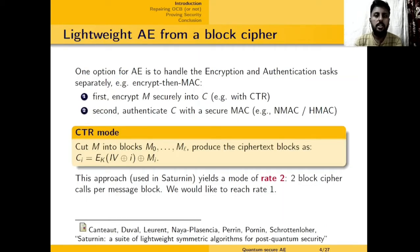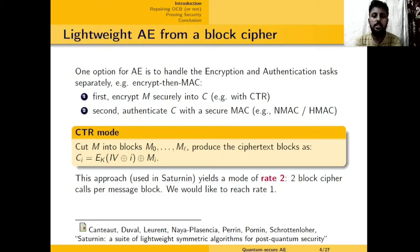One way to achieve authenticated encryption is to handle encryption and authentication tasks separately, like in the encrypt-and-MAC paradigm, where we first encrypt the message securely into a ciphertext C using some mode like counter mode, and then authenticate C with a secure MAC like NMAC or HMAC. This gives us a secure AE mode. But the problem is that it is not lightweight — it is rate 2, meaning we need two block cipher calls for every message block. What we want is a rate-1 AE mode that only spends about one block cipher call per message block.